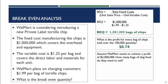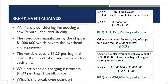Walmart management says they won't introduce a new product unless they can achieve $2 million in profit in the first year. So how many bags do they need to sell? The equation becomes: ($1,000,000 fixed costs + $2,000,000 profit) ÷ ($1.99 − $1.25 variable cost). The answer is 4,054,054 bags of tortilla chips. That sounds like a lot, but remember — Walmart has 3,407 supercenters in the United States.